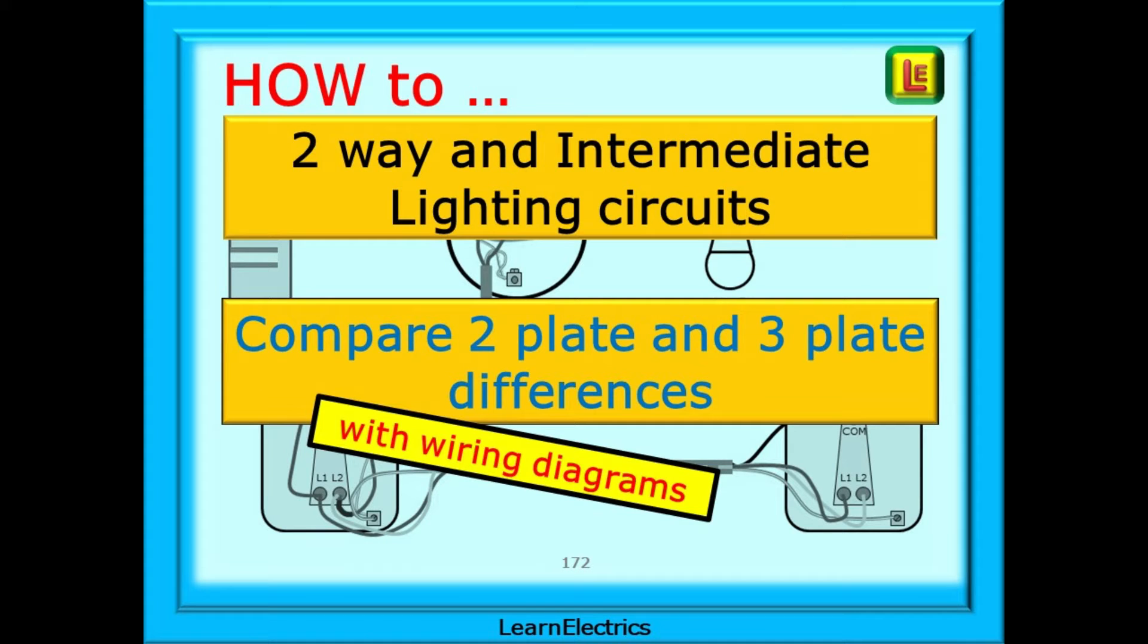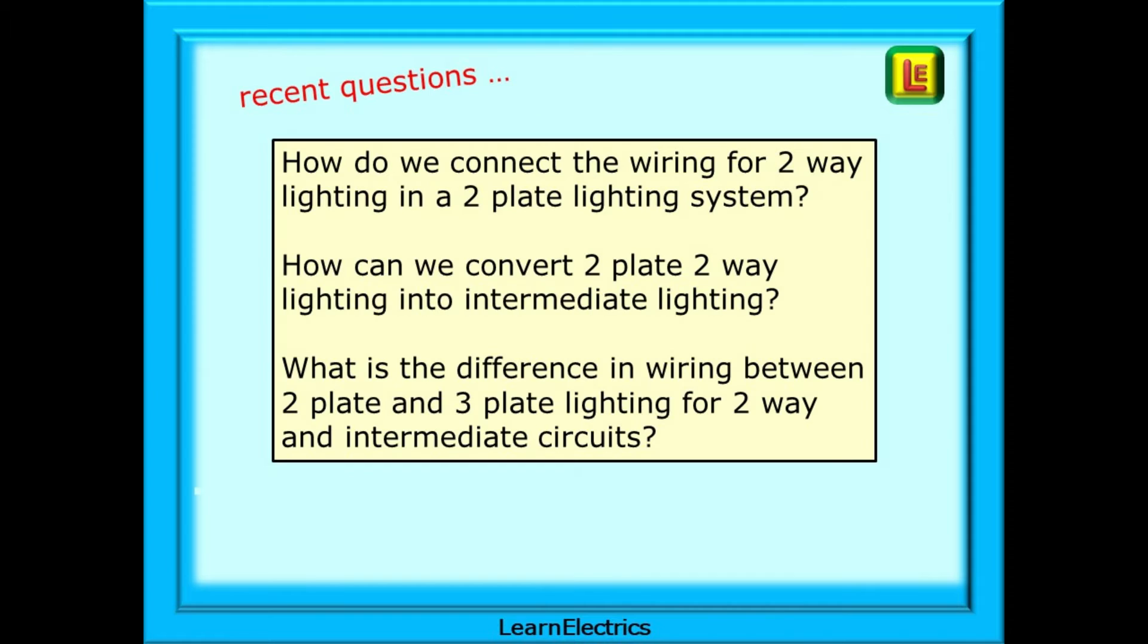In this Learn the Electrics video we will look a little deeper into lighting circuits and compare the differences between two common wiring styles. Some recent questions have included how do we connect the wiring for two-way lighting in a two-plate lighting system, how can we convert two-plate two-way lighting into intermediate lighting, and what is the difference in wiring between two-plate and three-plate lighting for two-way and intermediate circuits?